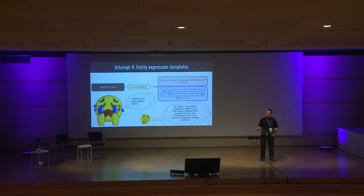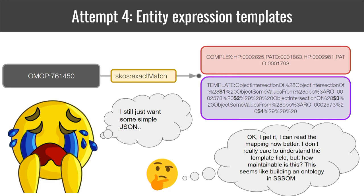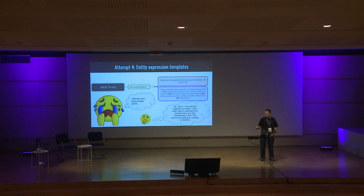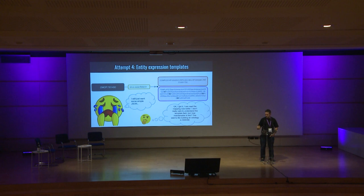We then started thinking: maybe we can embed some kind of templating or schema system in the same metadata model. Instead of just having an expression like attempt one's relatively simple-looking list, you also embed a template that has an OWL class expression with slots in it, put this for example in the header of a mapping set. We get a nicer-looking entity expression and can swap out templates to whatever templating or schema system we need depending on use cases.